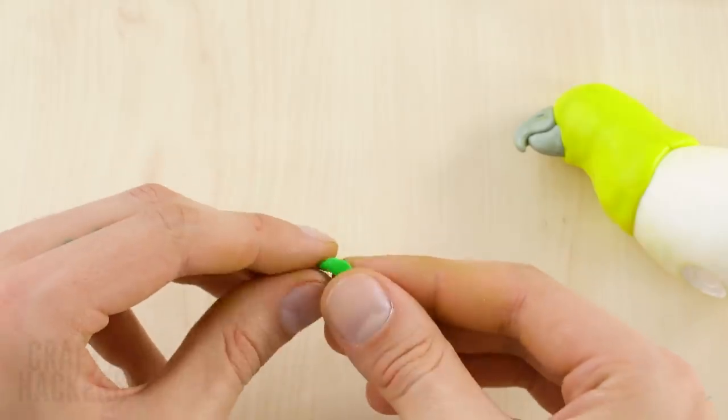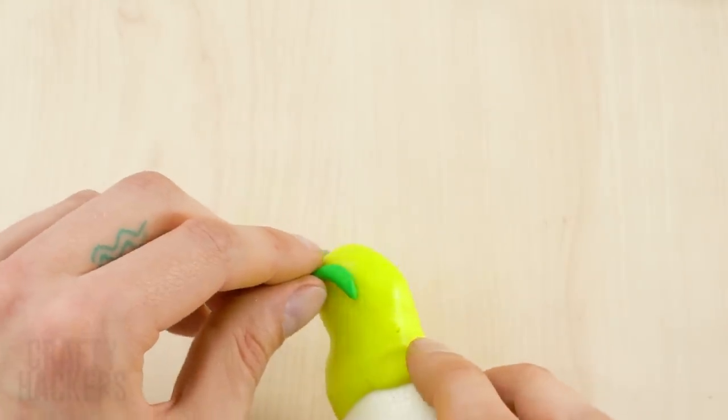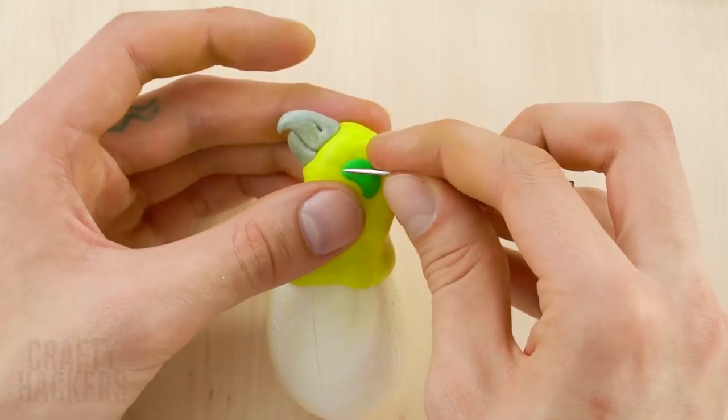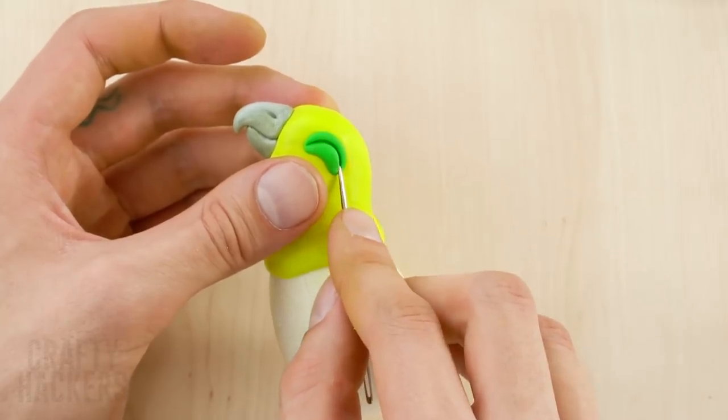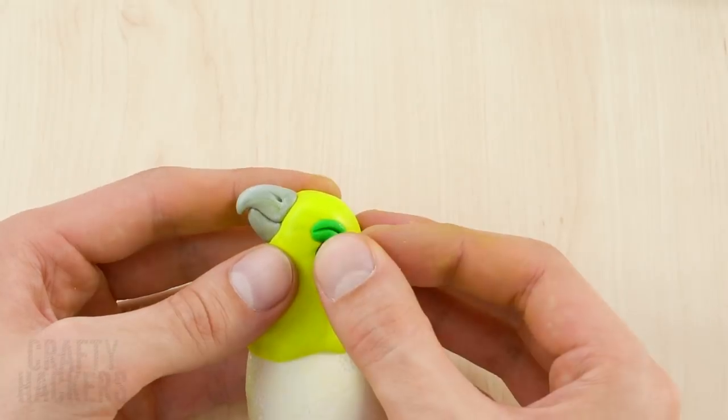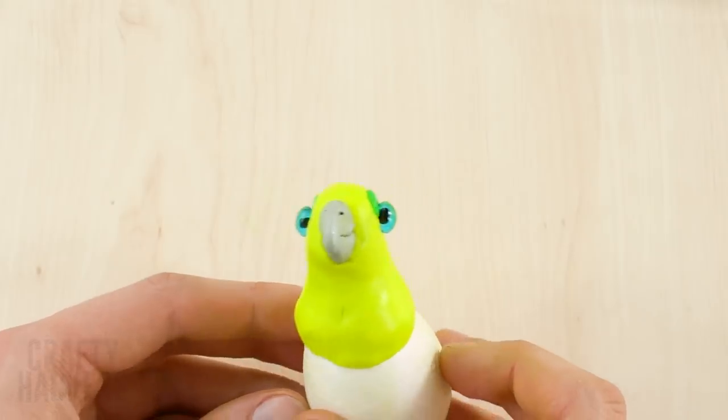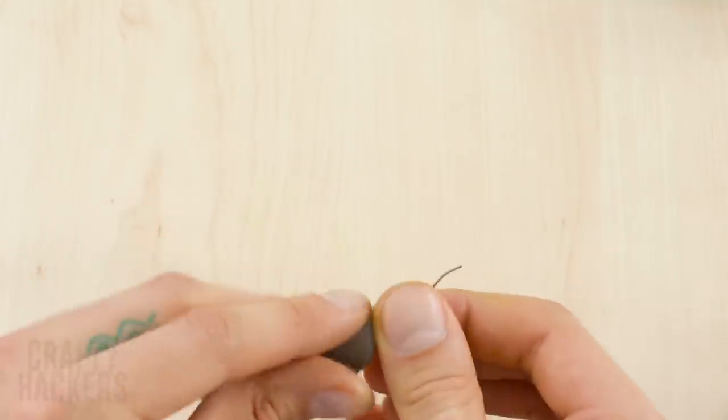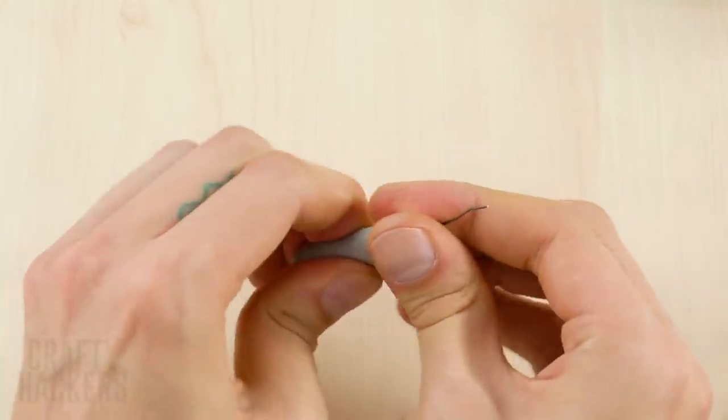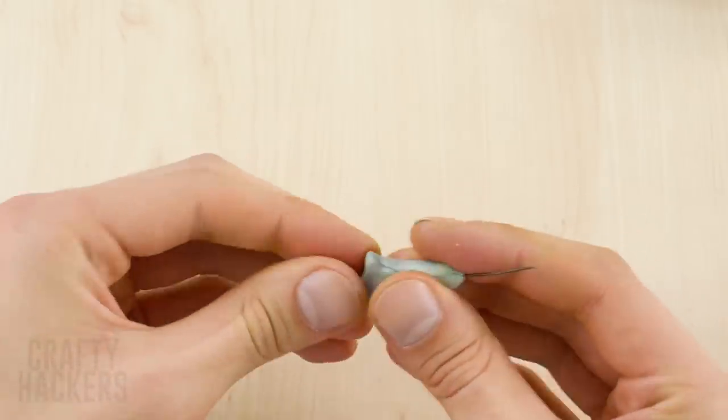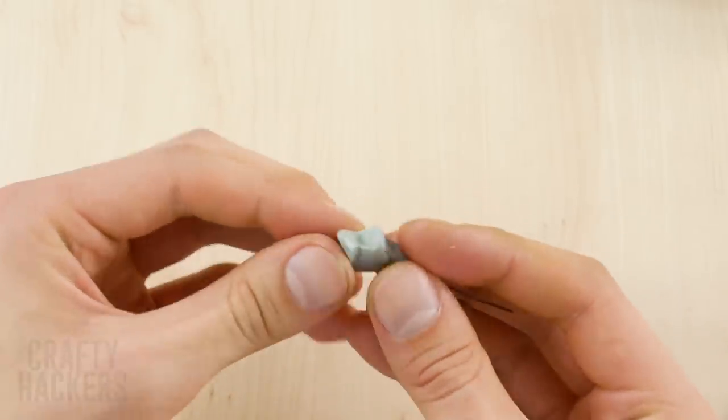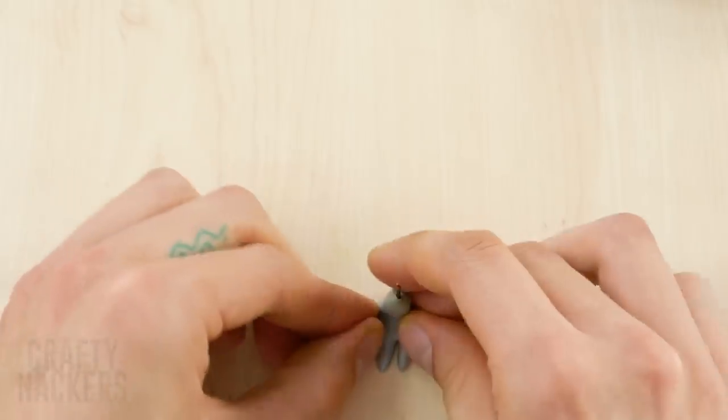Poke a couple of nostrils in each side of the beak. Form his eye from a piece of green clay. Then add detail with a needle or toothpick. Stick a craft eye on to complete it. Now let's give this little guy some feet. Form some grey polymer clay around a piece of wire.